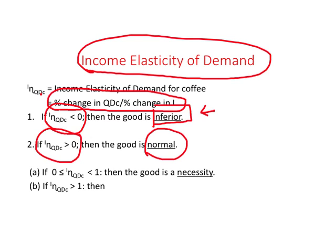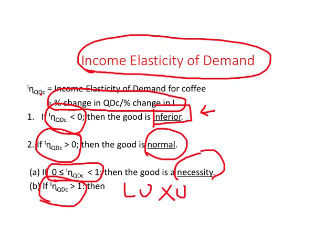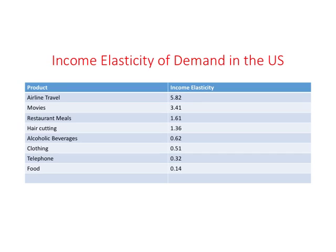If income elasticity of demand is a positive number but less than one, the good is considered a necessity. If income elasticity of demand is greater than one, the good is considered a luxury. So as far as income elasticity of demand goes, you should know when a good will be inferior, when it will be normal, and if it is normal, when it will be considered a necessity or a luxury.